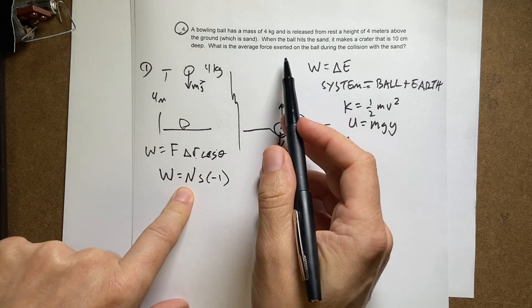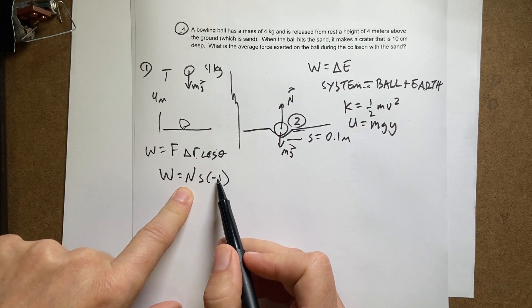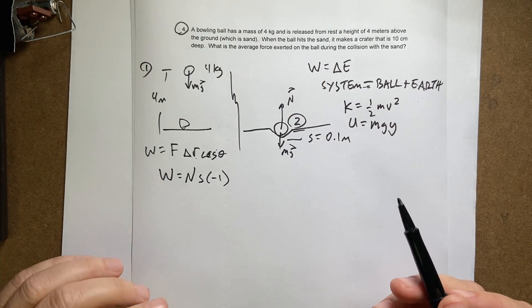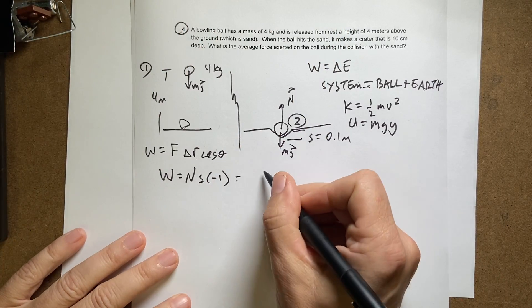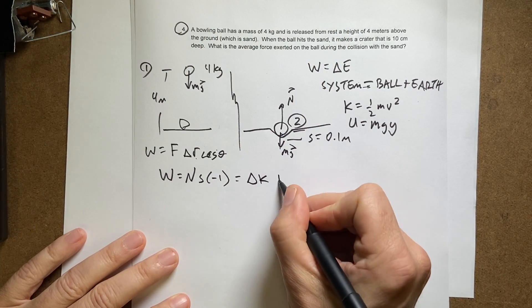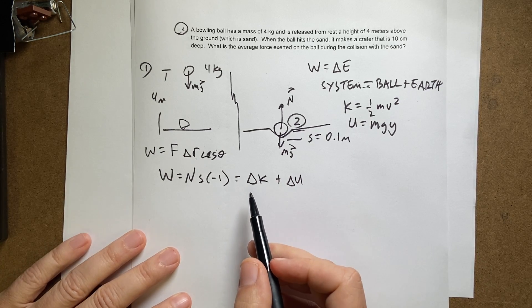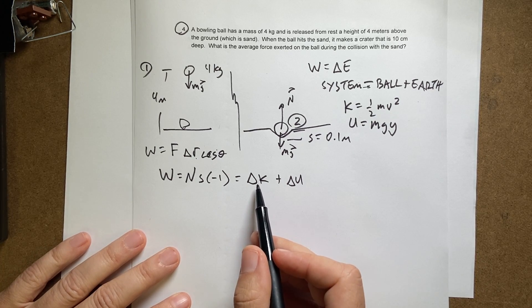And the negative one is because it's moving this way but the ground's pushing up that way. And that's going to be equal to the change in kinetic energy plus the change in potential energy. So here is a really nice thing. What's my change in kinetic energy?